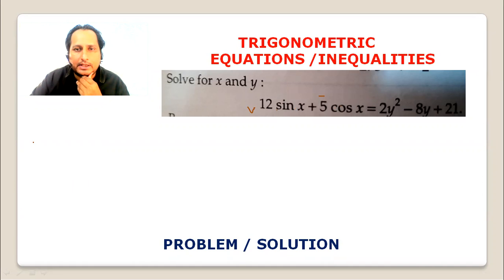I don't have to change the form of 12 sin x, so I don't have to focus on the form of 5 cos x. Here the maximum value is root of a square plus b square.